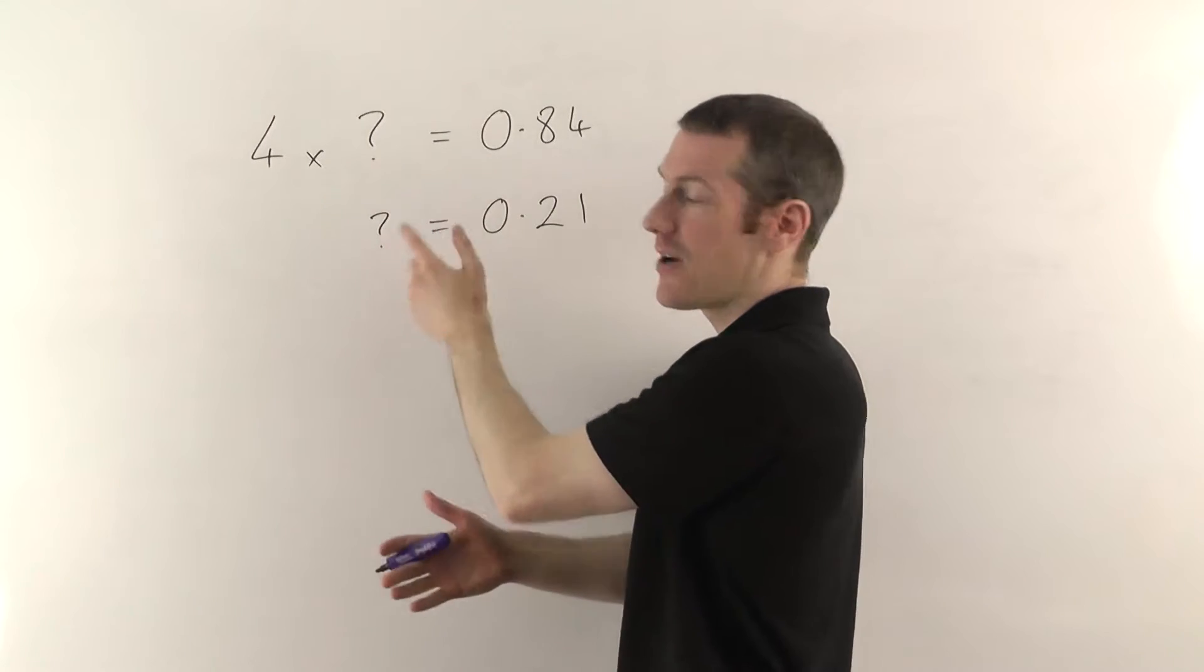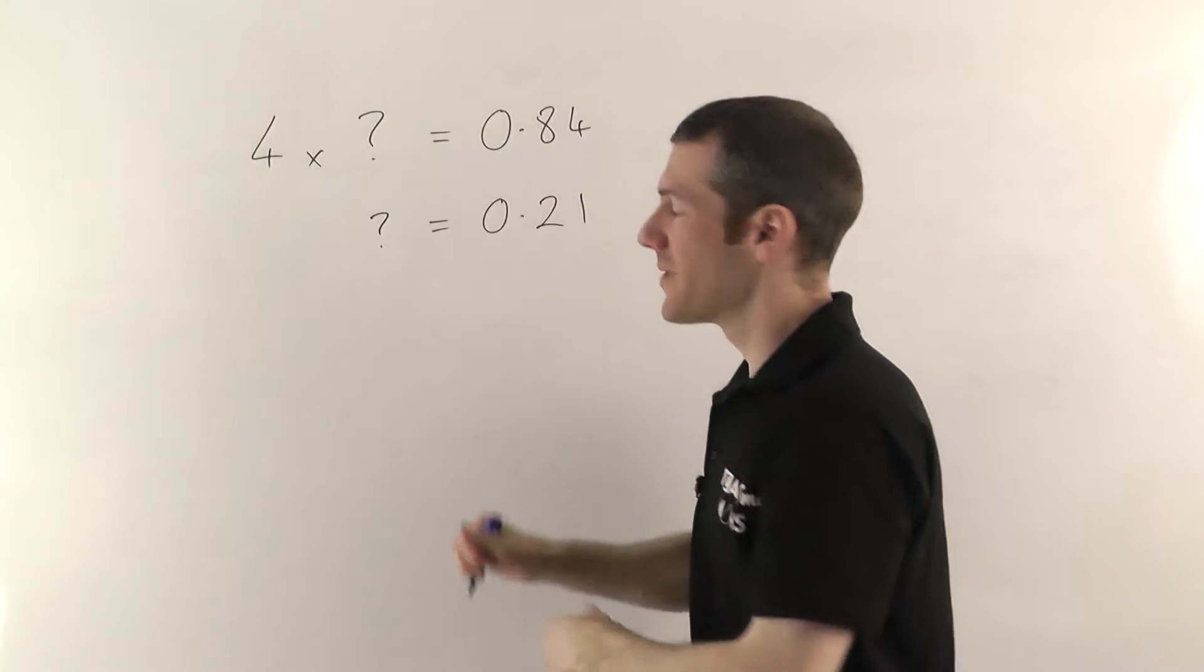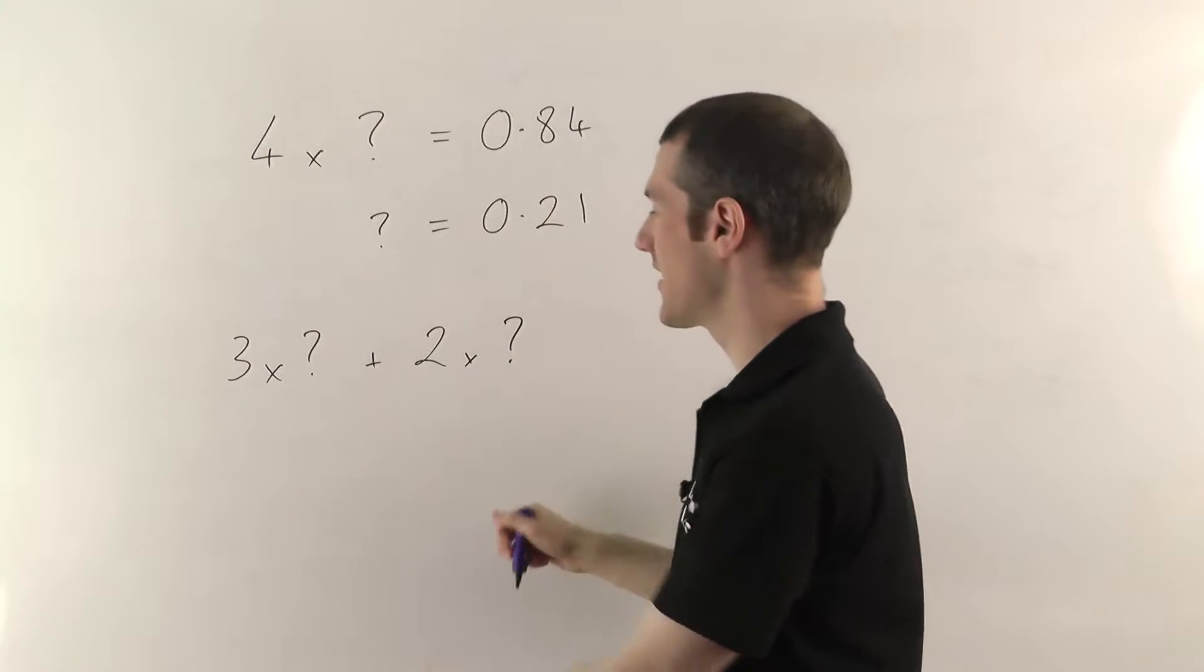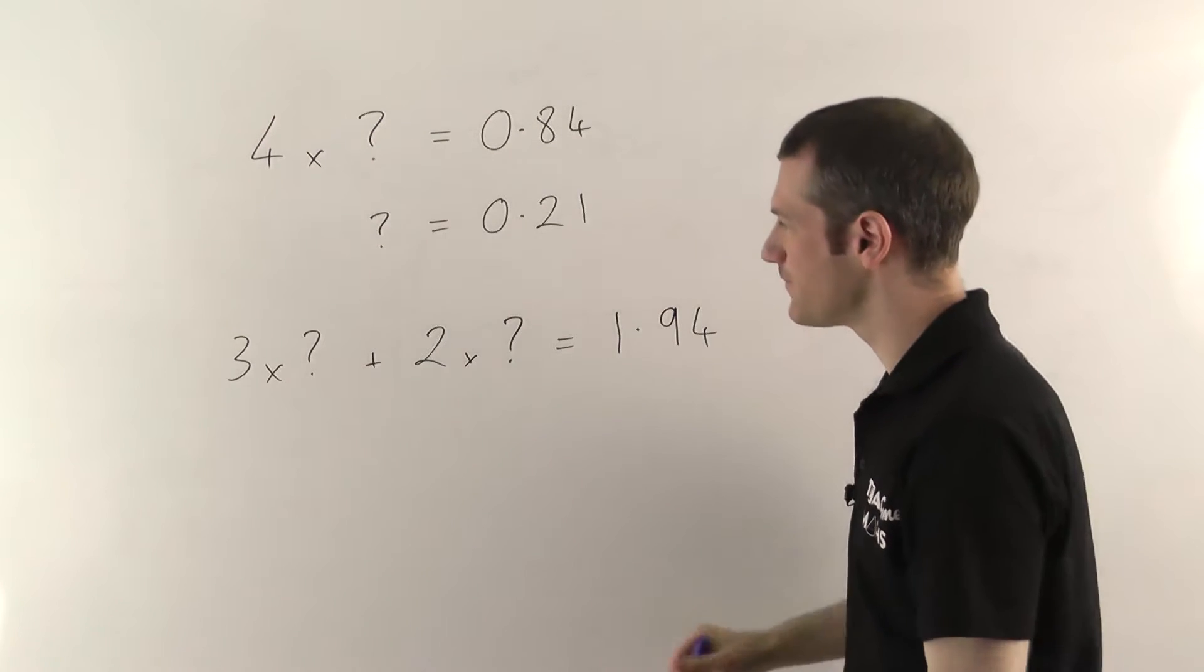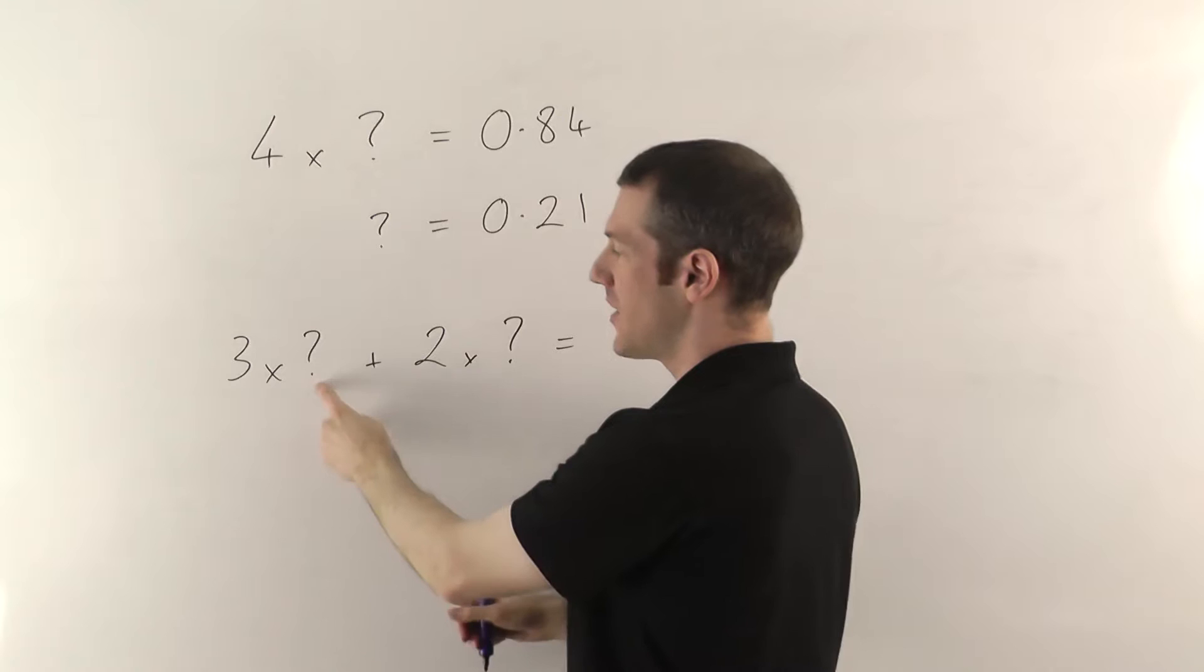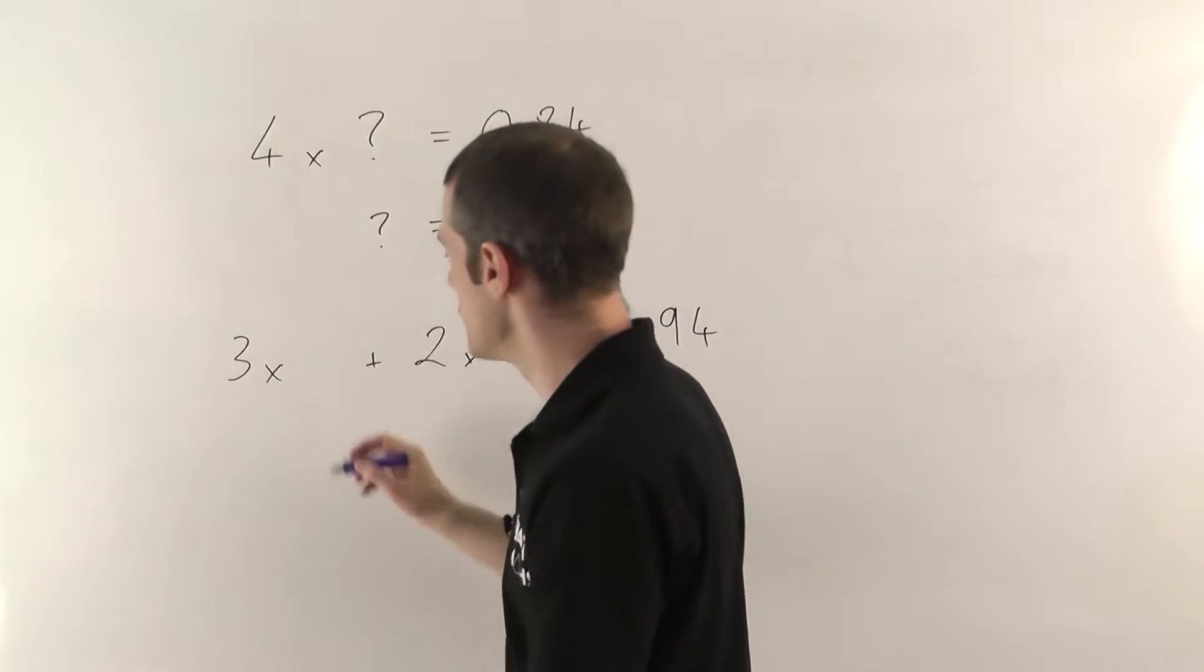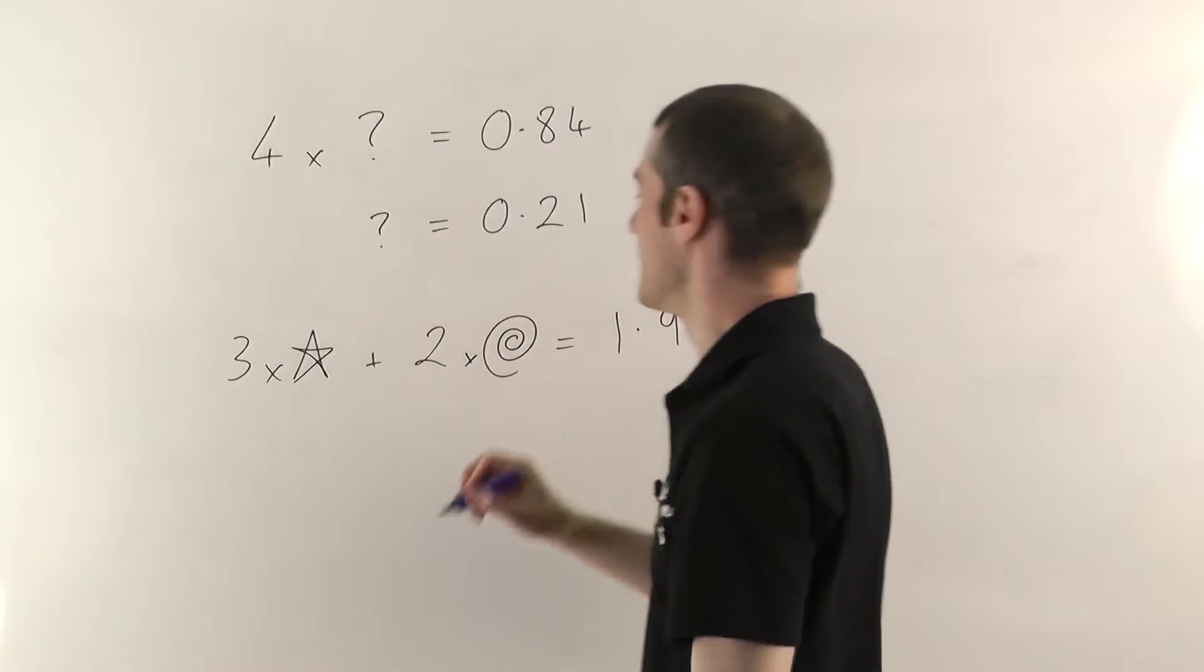But before we get on to that, just to talk about the question mark here, I've used a question mark to represent this unknown number, the price of an apple in this case. But that can get rather confusing. If I went into the shop on a different day, and I bought three apples, and I also bought two bananas, and I don't know the prices of either of them or didn't pay attention to them, and the total price turned out to be one pound and 94 pence or something, at this point, it gets really confusing. Because these question marks represent different things. The price of an apple is not the same as the price of a banana.